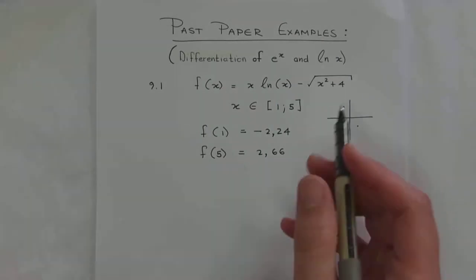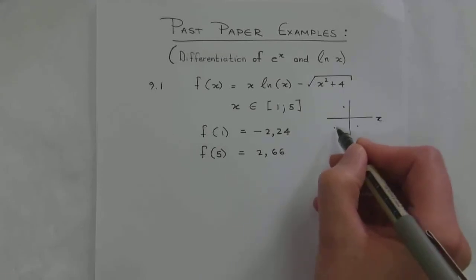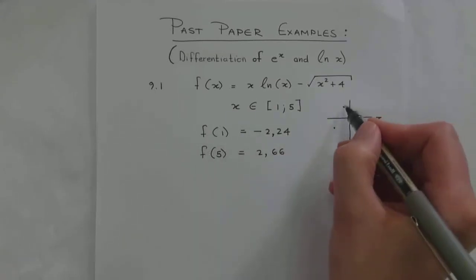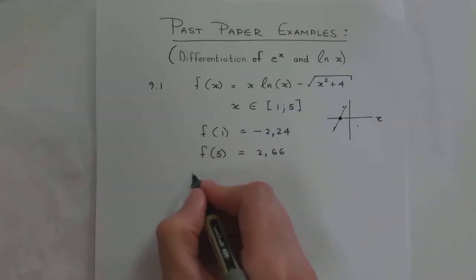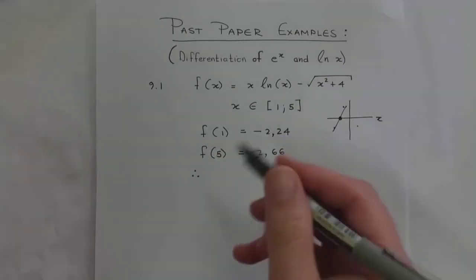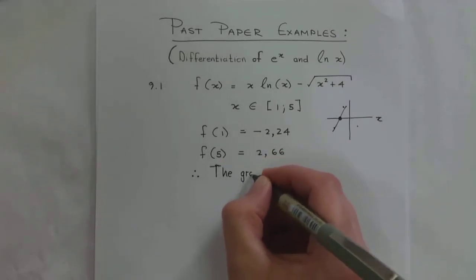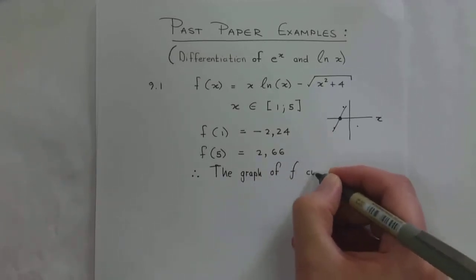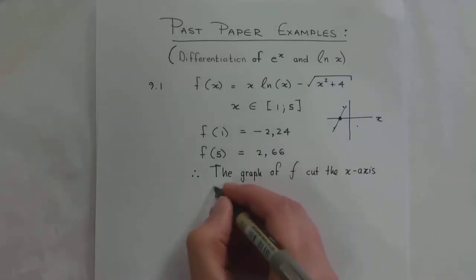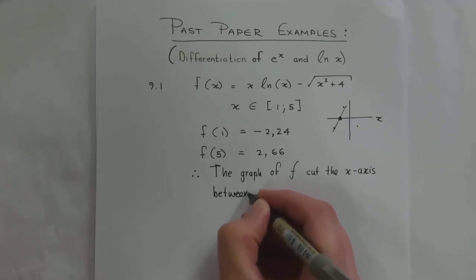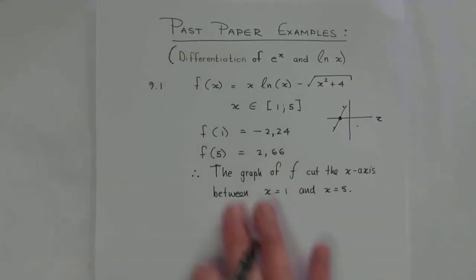That is exactly what I wanted. f(1) has a negative y-value so it's below the x-axis, and f(5) goes positive so it's above the x-axis. Somewhere it's got to cut that x-axis, which means it's got to have a root. Therefore, the graph of f cuts the x-axis between x = 1 and x = 5, which means it does have a root somewhere between those two values.